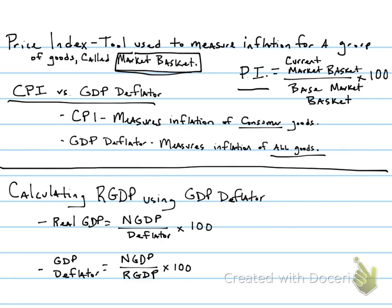The difference between CPI and GDP deflator: they're both price indexes, they just measure a different group of goods. The real reason why we calculate the GDP deflator is that it's the price index tool we use to convert nominal GDP into real GDP.